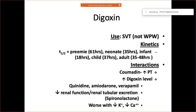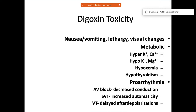Digoxin should not be given to patients with hypercalcemia or hypokalemia, since it acts on the sodium-potassium ATPase. Low potassium levels can push the patient into a severe crisis with multiple arrhythmias.